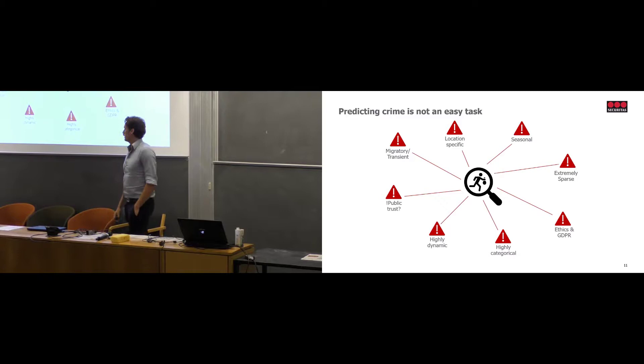So crime prediction, or working with this kind of data, is an immense challenge. Because there's a lot of problems. It's migratory, it can move around - crime waves, you might call it. There's also the public trust. How much do you trust when you work with this kind of stuff? There's location specific, seasonal, highly dynamic, highly categorical. There's ethics and GDPR involved. And then there's this, which is more relevant to a data scientist, I guess.